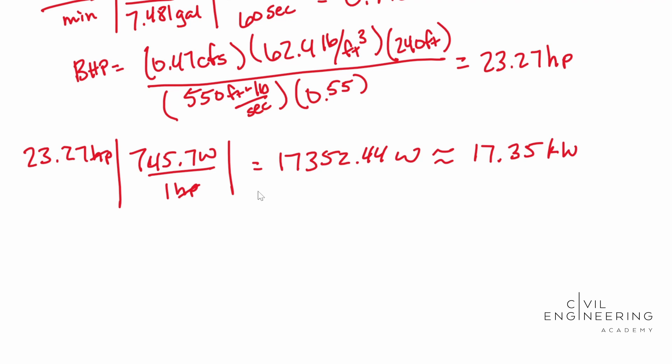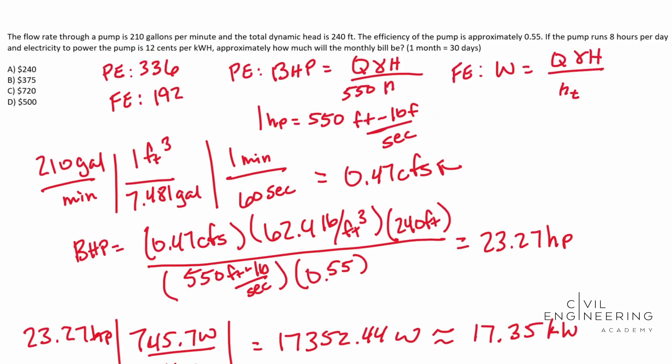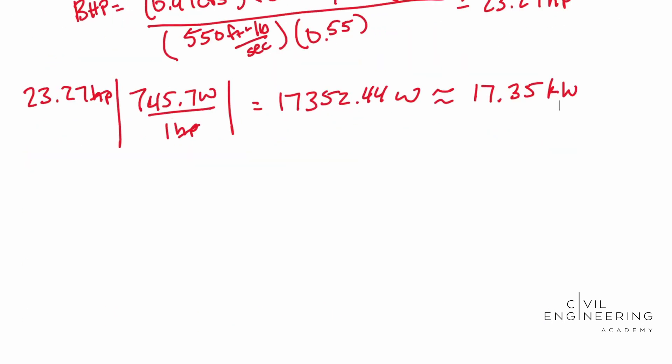So now we need to convert over. It gives us eight hours per day because it runs eight hours per day. And so we need to convert that over into a monthly basis because we're getting billed monthly. So we're going to go ahead and do that. Eight hours per day, and we know that there's 30 days in a month. And so this guy ends up with 240 hours per month.